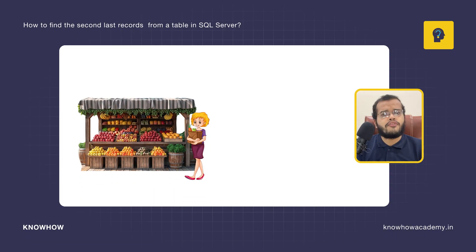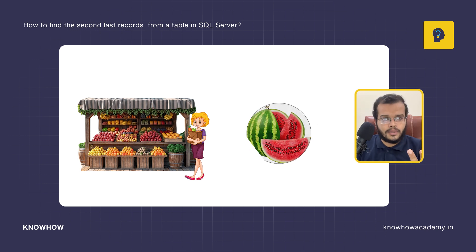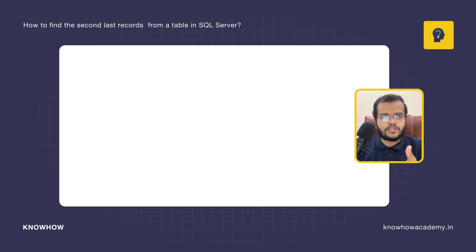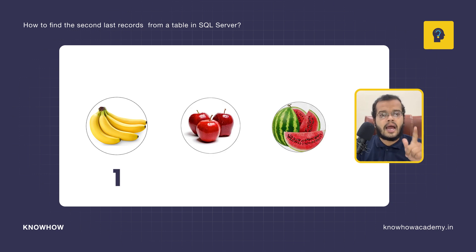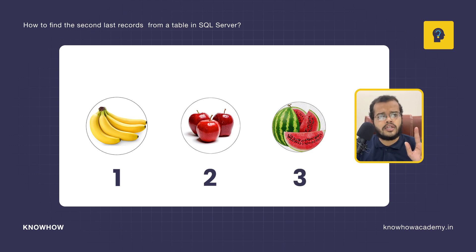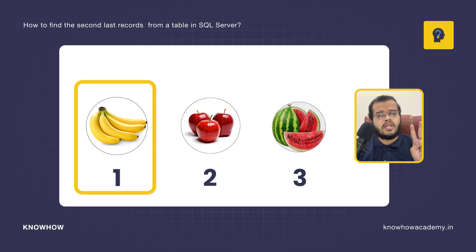Let me give you an example using a fruit shop. You purchased banana first, then apples, then watermelon. As per sequence: banana is number one, apple is number two, watermelon is number three. The first record is banana and the last record is watermelon. But I want to see the record of apple — that is the second last record.